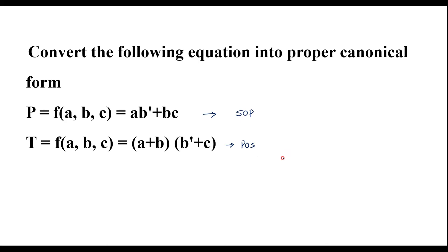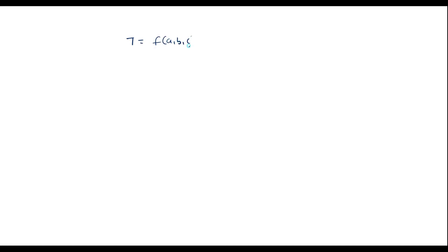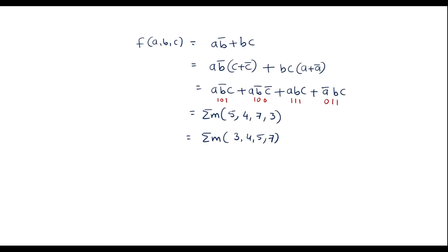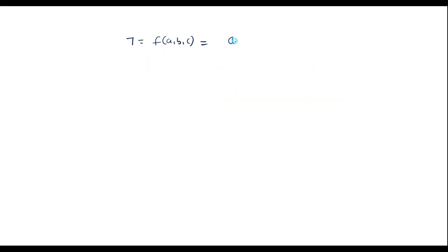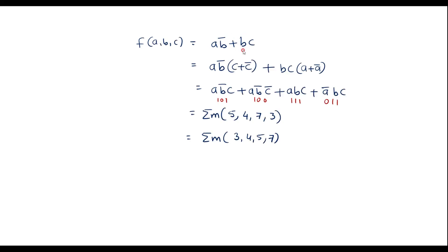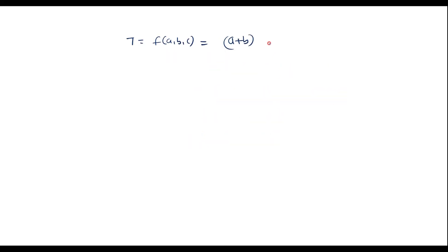Now let me consider the POS equation: f(a,b,c) = (a+b)·(b'+c). These are called max terms. We will try to convert this expression into standard POS form. In standard POS form, each maxterm consists of all literals. Here literal c is missing from the first term.